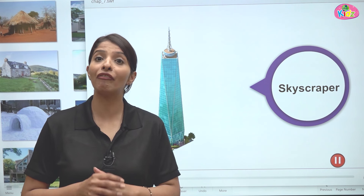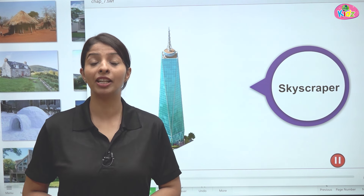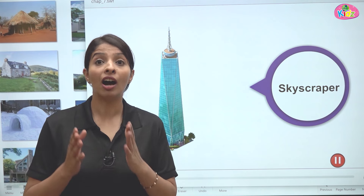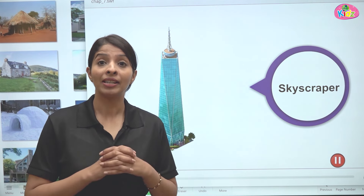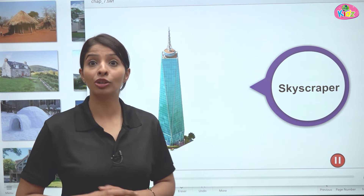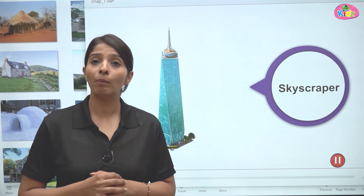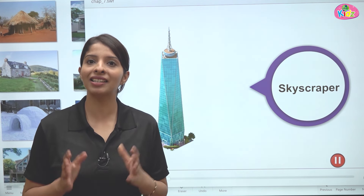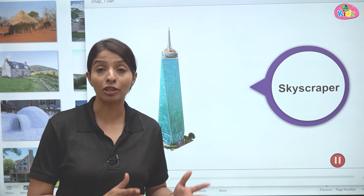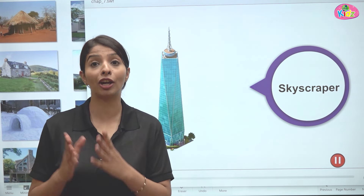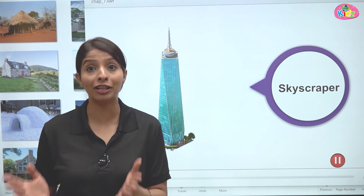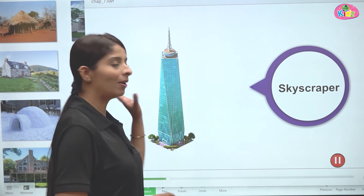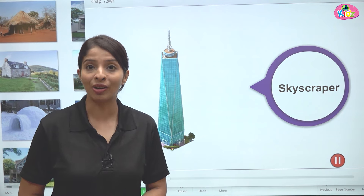The next type of house is skyscrapers. Skyscrapers are very tall buildings — multi-story buildings that can have even a hundred floors. You must have seen very tall buildings in countries like Dubai. They are the skyscrapers. Residential spaces, hotels, restaurants, and retail shops — all facilities are found in these tall buildings.